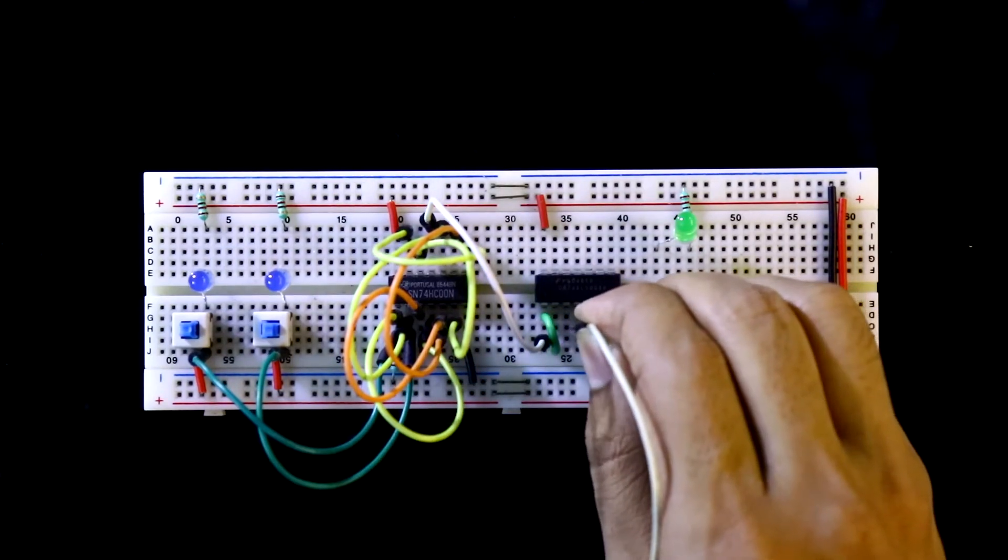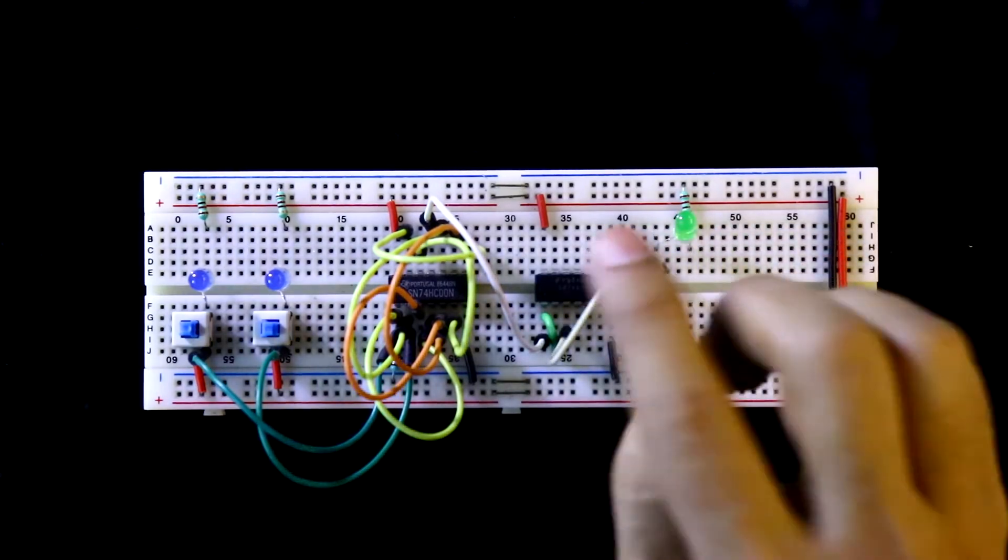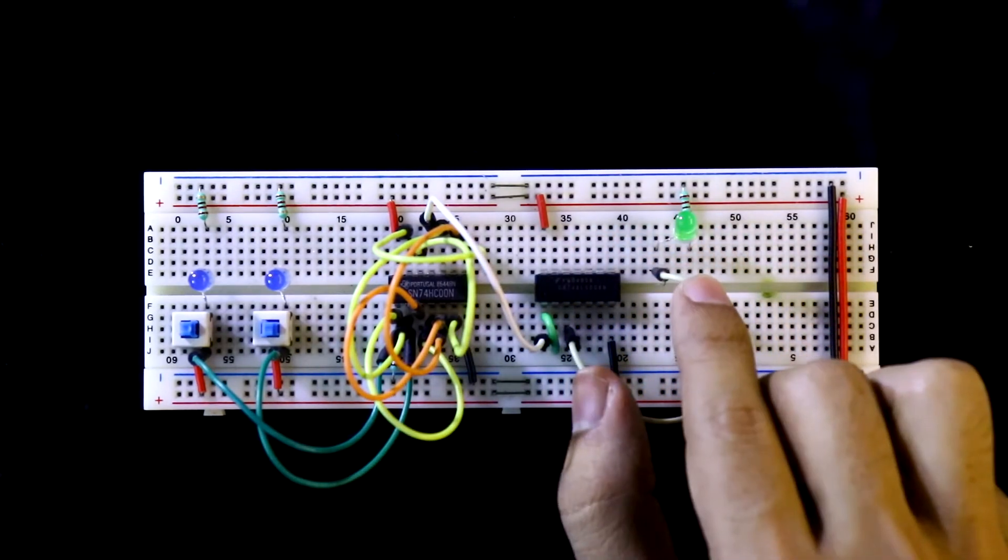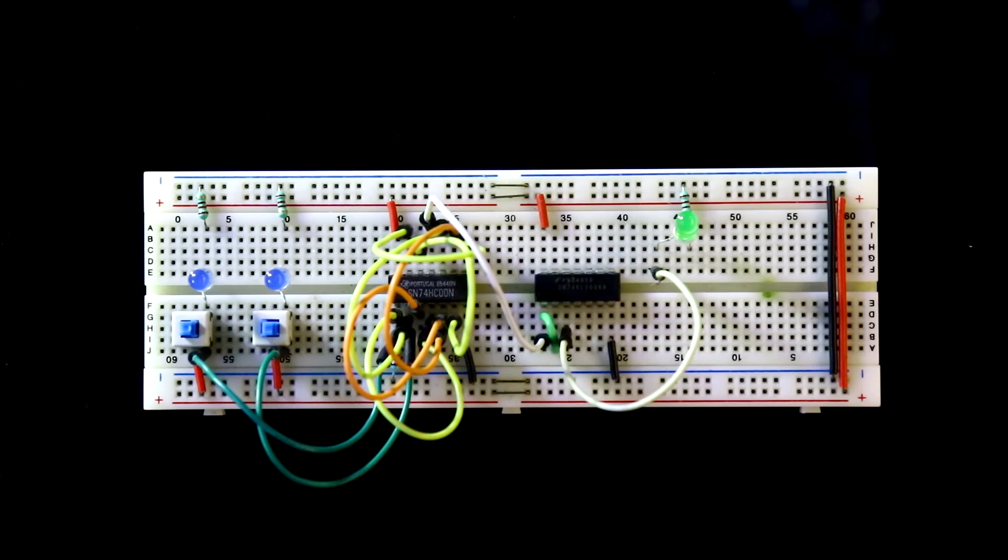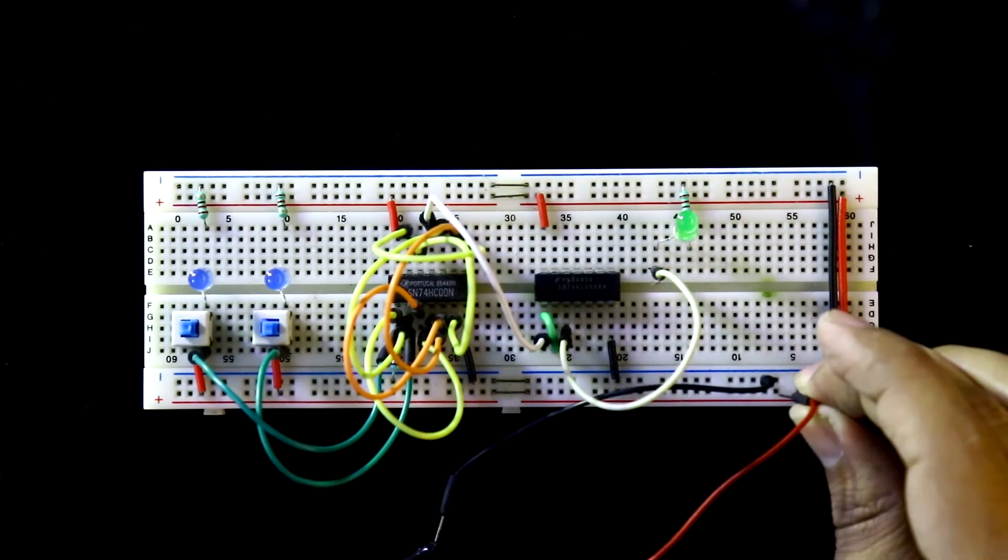Then the output, that is pin number 3, is connected to the LED. Now I'm connecting plus 5V power supply. Here is the negative and the positive.